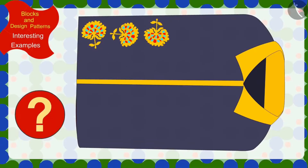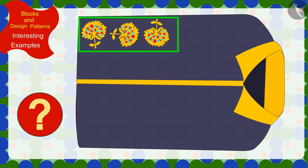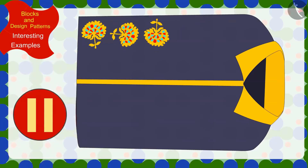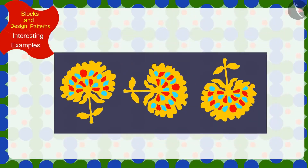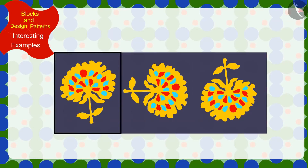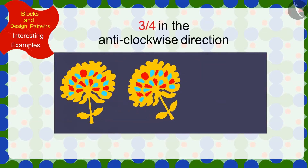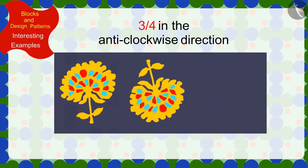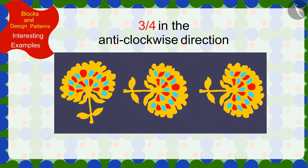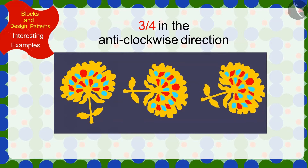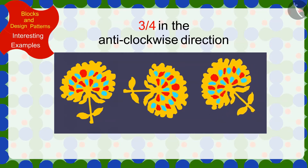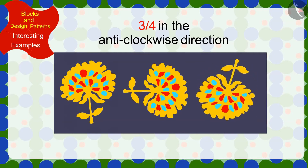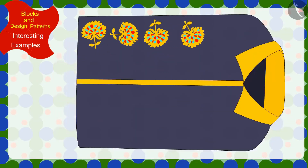Children, can you help Uncle recognize the rule of this pattern made by Kittu? If you wish to, you can find the solution by stopping the video. If we look closely, we will find that this impression is made by rotating its previous impression three quarters in the anticlockwise direction. In the same way, the impression made after it is also made by rotating three quarters in the anticlockwise direction.